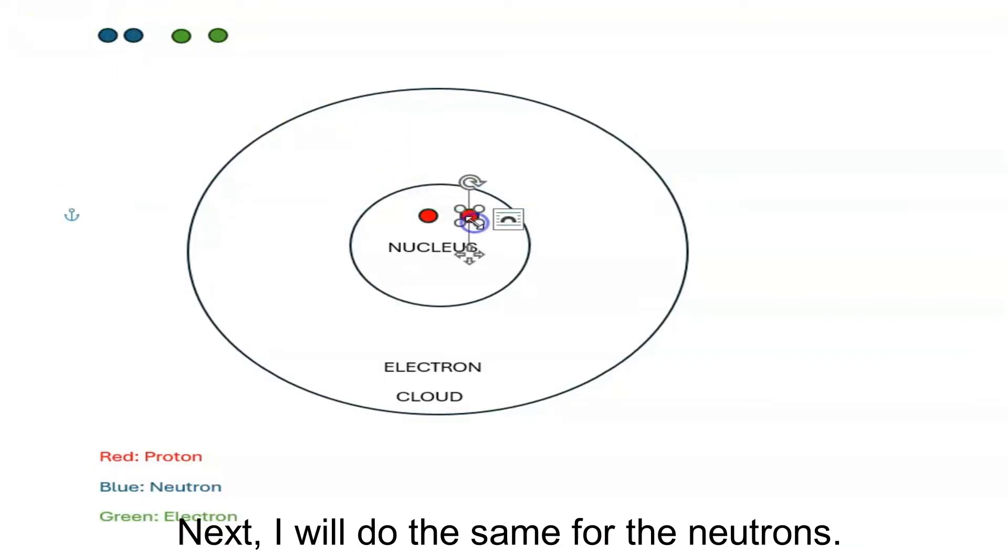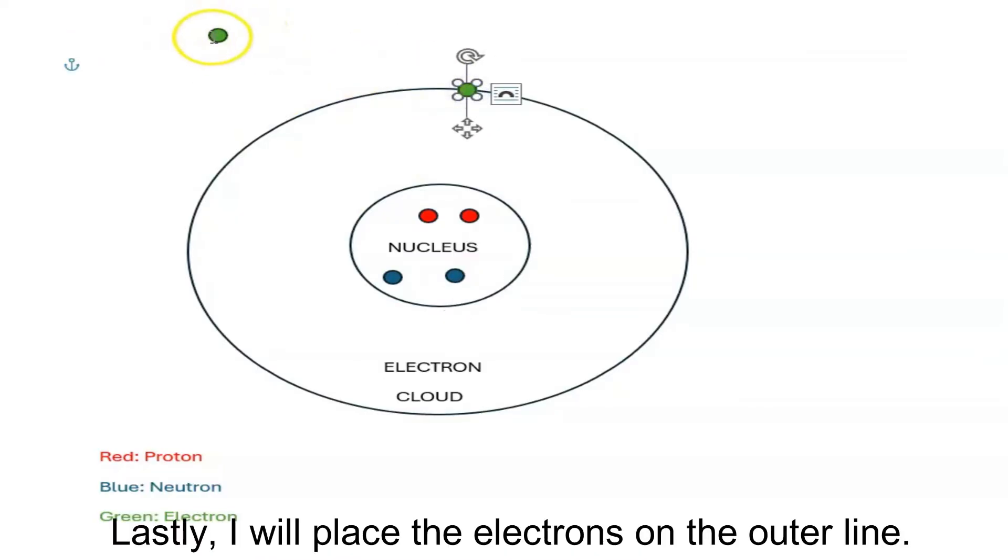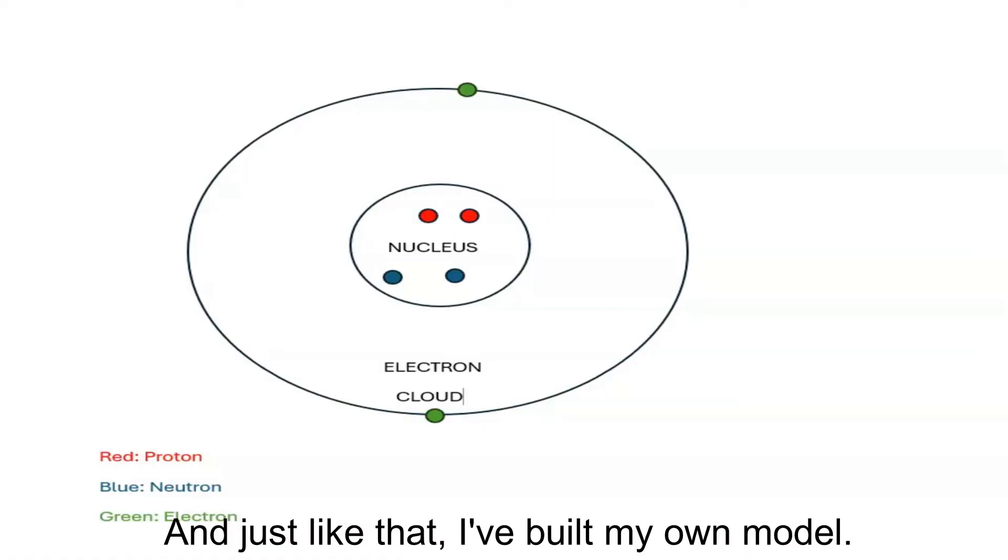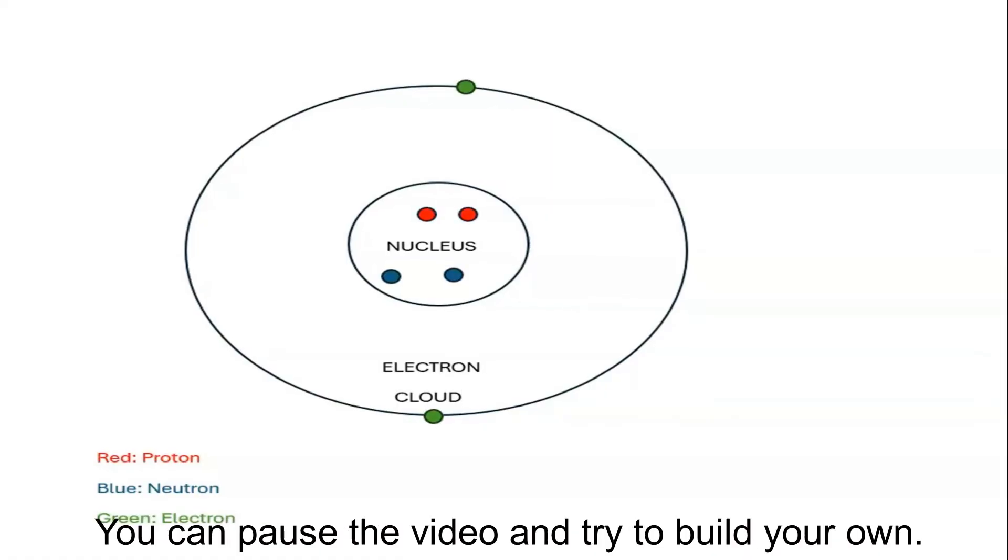Next, I will do the same for the neutrons. Next, I will place the electrons on the outer line. That line represents the electron cloud. And just like that I've built my own model. You can pause the video and try to build your own.